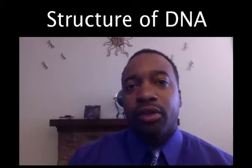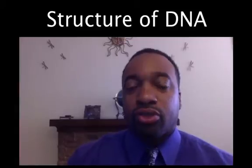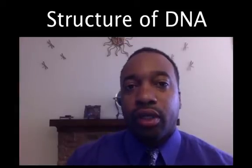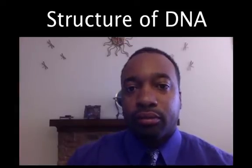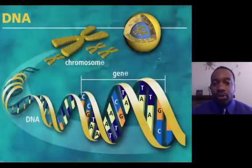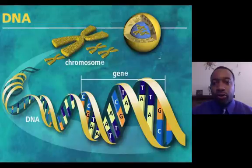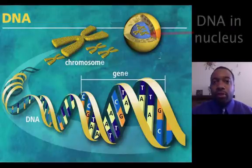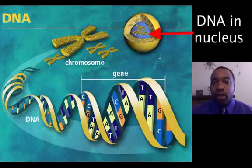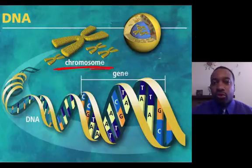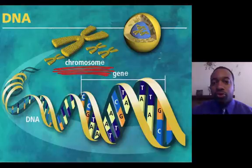Hi. This video is going to summarize the structure of DNA. So we've seen this image before — it shows us that our DNA is typically stored in the nucleus of a cell. And then we see these structures, the chromosomes, where this DNA is coiled and supercoiled into the structure.